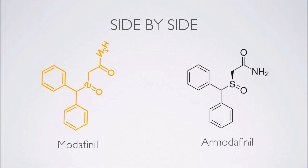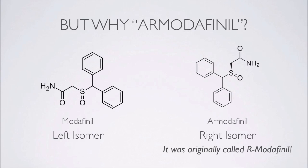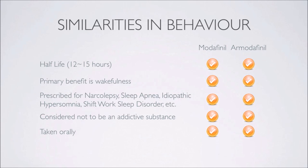For those paying extra attention, you'll notice H2N on the Modafinil end of that group, and NH2 on the R-Modafinil one. I'm not a chemistry genius, but I think that's because the binding happens on the nitrogen as opposed to the hydrogen — don't quote me on that. So Modafinil and R-Modafinil are actually based on the same chemical, the same molecule. Modafinil was discovered first and is the left isomer. R-Modafinil is the right isomer — it was originally called R-Modafinil, meaning literally the right Modafinil, later shortened to Armodafinil.